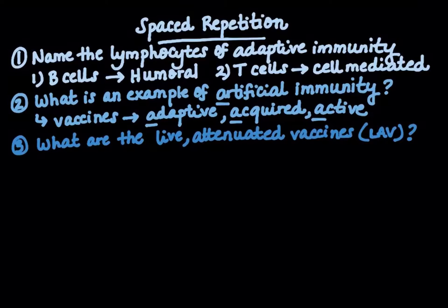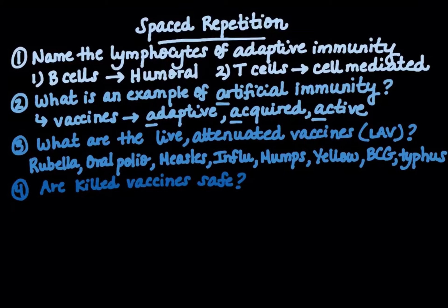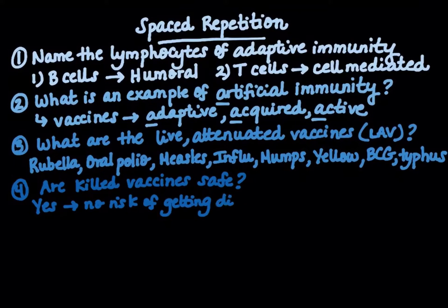Back to our spaced repetition review. What are the live attenuated vaccines? There's a mnemonic: 'ROME IS MY BEST PLACE TO GO' — standing for Rubella, the Oral polio vaccine, Measles, Influenza, mumps, Yellow fever, the BCG vaccine for TB, and the Typhus vaccine. Are killed vaccines safe? Yes — they are completely inactivated with no risk of disease. An easy rule: everything not on the live vaccine mnemonic list is a killed vaccine.